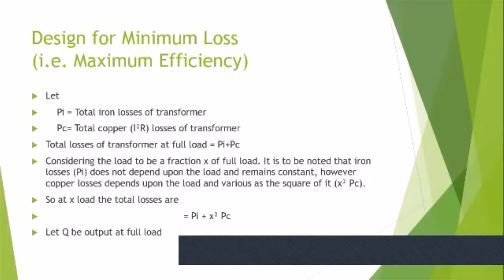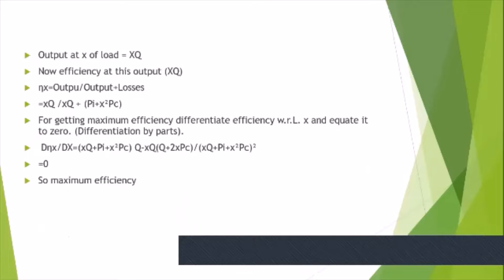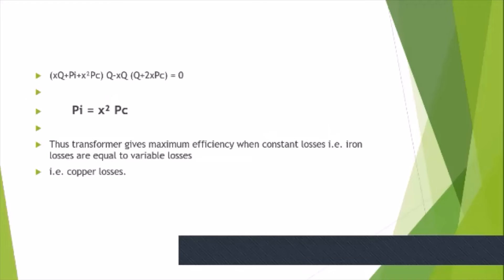Let Q be the output at full load. Output at fraction x of load is xQ. Efficiency at this output equals output divided by output plus losses. For maximum efficiency, differentiate with respect to x and equate to zero. This differentiation by parts gives the result equal to zero, so maximum efficiency occurs when PI equals x²PC.